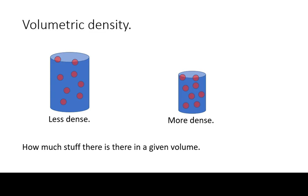Alternately, you can have the same amount of stuff, but in a different volume. For example, both of these objects have the same amount of stuff in them, but because the volume on the right is smaller, the stuff is more tightly packed, hence more dense.